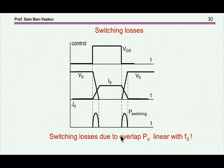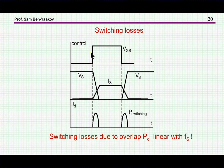In this second part we are going to deal with switching losses, or losses due to the switching effect. We start with the switching losses due to transitions. If I'm turning on a transistor by the gate voltage — the gate goes up and then back down — the current will start rising while the voltage across the transistor will go down, and similarly at the trailing edge.